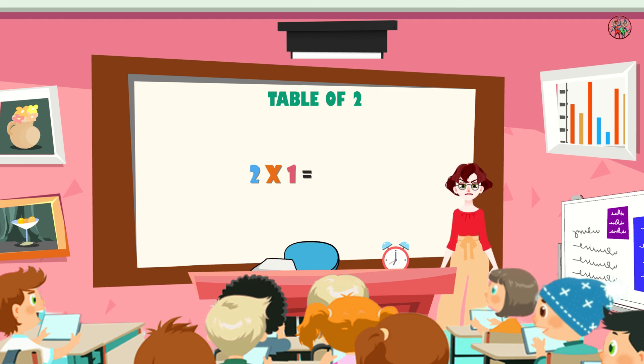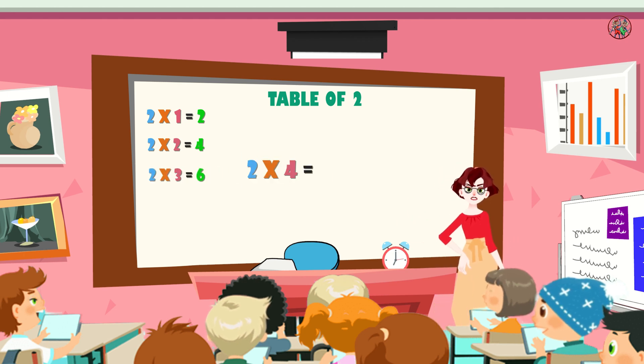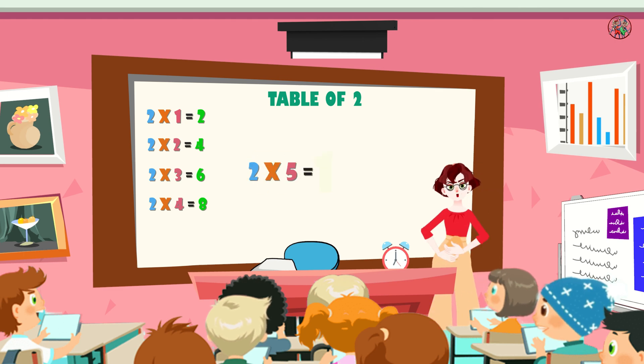Two one's a two. Two two's a four. Two three's a six. And two four's an eight. Two five's a ten.